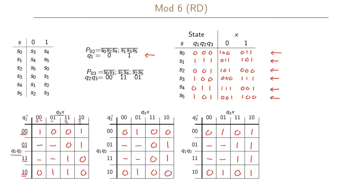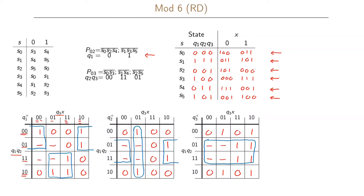Using our Karnaugh maps we find prime implicants. For the first map, one prime implicant covers three ones and one don't care term, and another covers the remaining three ones with another don't care. For the second Karnaugh map there are two prime implicants covering all ones using all don't care terms. For the third Karnaugh map there is one large prime implicant using all don't care terms, and two relatively large prime implicants covering the rest of the ones.